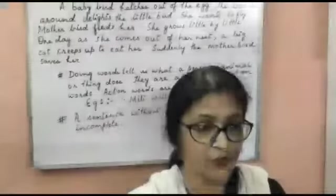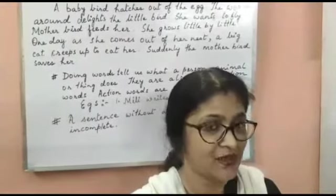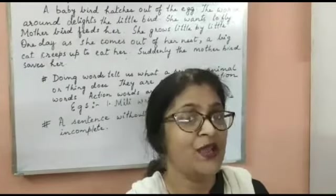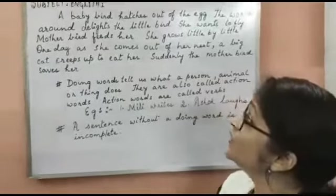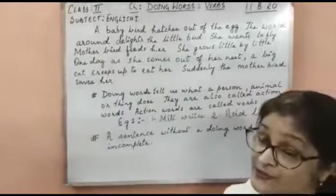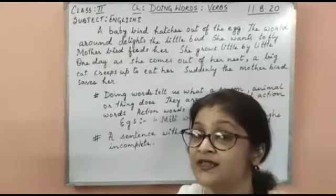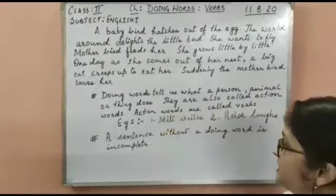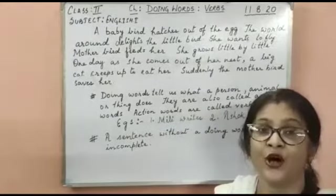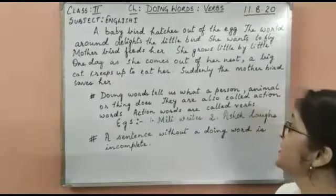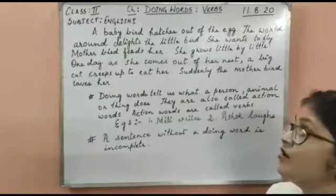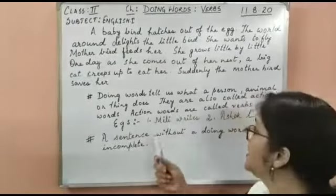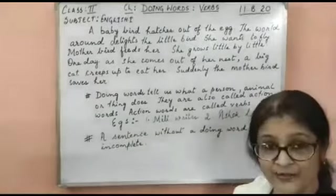I hope you all have enjoyed the story. Today we are learning Doing Words, or Verbs. What are Doing Words? Doing Words tell us what a person, animal, or thing does. They are also called Action Words, and Action Words are called Verbs.